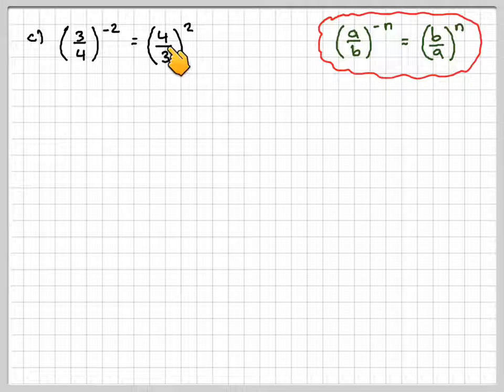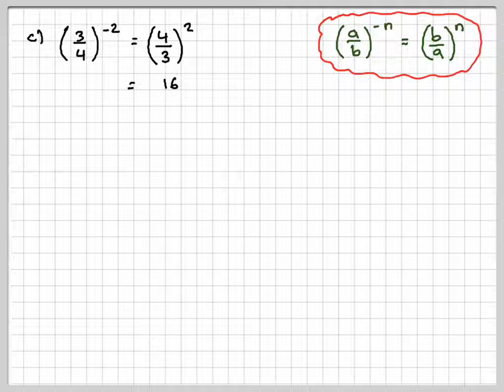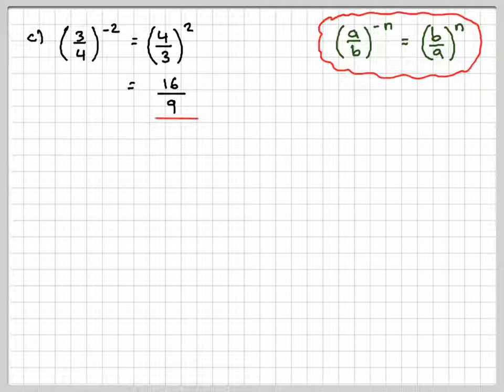And then we just need to square the 4, which gives me 16, and square the 3, which gives me 9. So we get an answer of 16 over 9, and it's okay to leave it as an improper fraction.